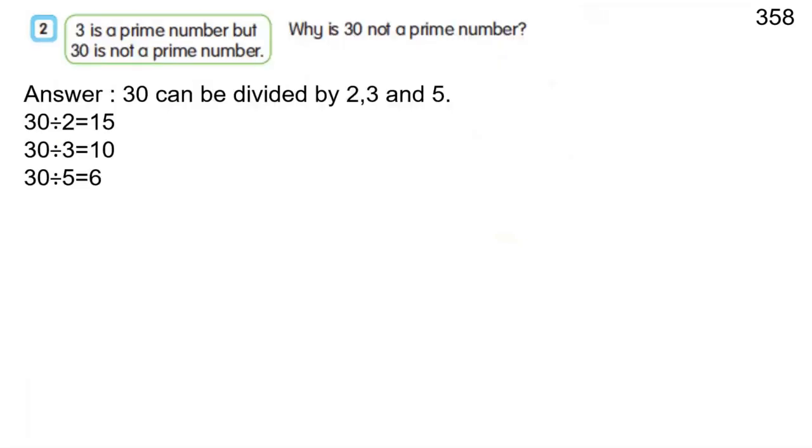Question 2: 3 is a prime number but 30 is not a prime number. Why is 30 not a prime number? Answer: 30 can be divided by 2, 3, and 5. 30 divided by 2 is equal to 15. 30 divided by 3 is equal to 10. 30 divided by 5 is equal to 6.